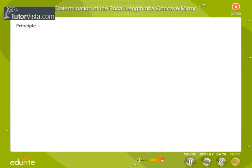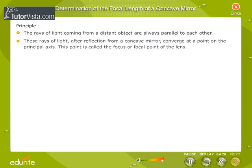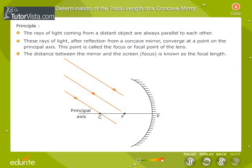Let us understand the principle of the Distant Object Method. The rays of light coming from a distant object are always parallel to each other. These rays of light, after reflection from a concave mirror, converge at a point on the principal axis. This point is called the focus or focal point. The distance between the mirror and the focus is known as the focal length. Here you can see the ray diagram showing the principle of the Distant Object Method.